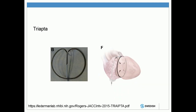There are still a few other devices available. This is the Triapta — an interesting concept, perhaps a little bit scary as surgeons. This is placed through the femoral vein, going through the right atrial appendage and actually going all the way around the base of the heart. There's really no surgical representation of this, but it's an interesting concept and we'll have to see how it develops.